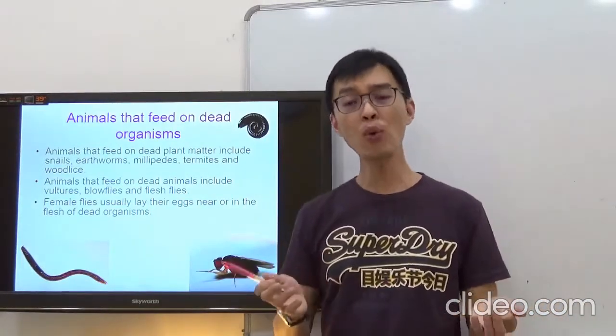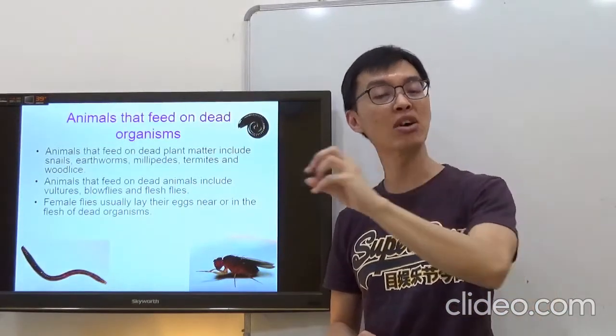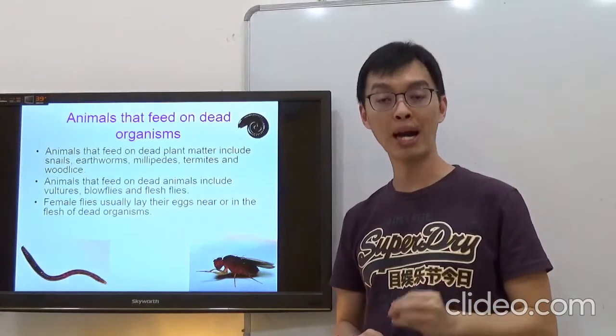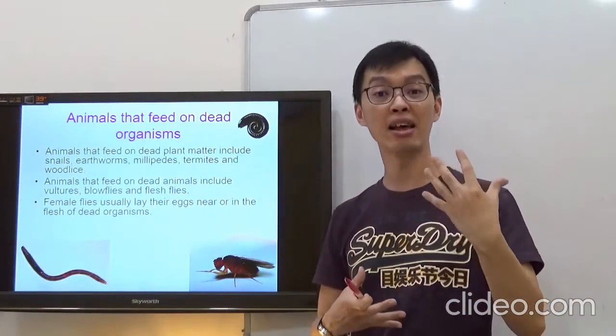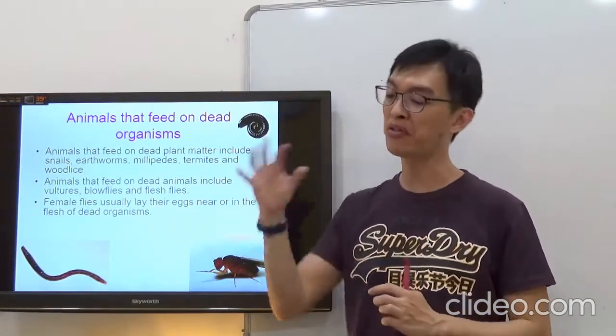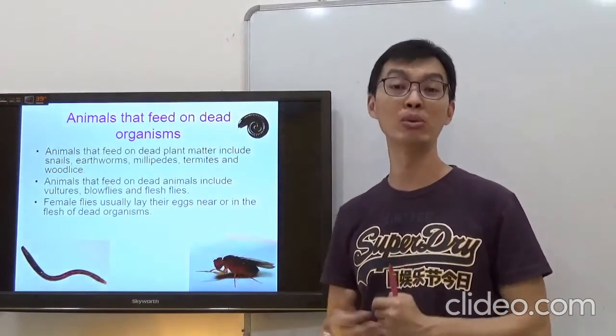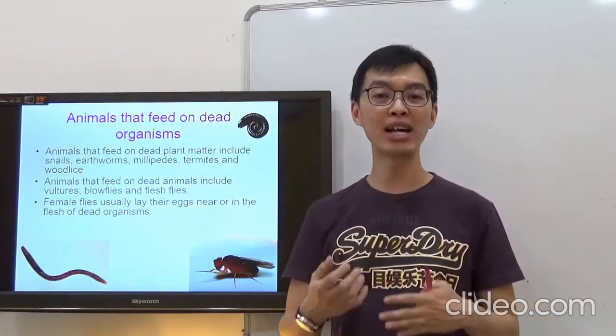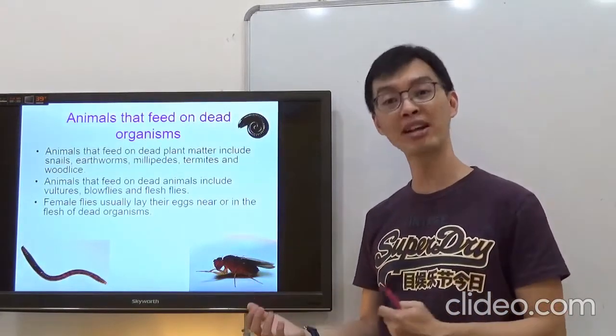Now, what did they do? When they eat the dead organisms, they actually lay eggs on the dead organisms. Why? So that when they lay eggs, their young can be hatched. Their eggs can be hatched and their young will be able to feed on the flesh of those dead animals. So you see, they are trying to reproduce to ensure the continuity of their own kind.